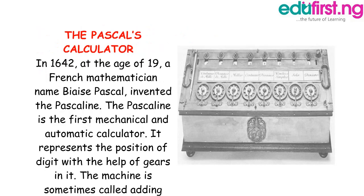The Pascal Calculator. In 1642, at the age of 19, a French mathematician named Blaise Pascal invented the Pascaline. The Pascaline is the first mechanical and automatic calculator. It represents the position of digits with the help of gears in it. The machine is sometimes called the Arithmetic machine or Pascal Calculator.